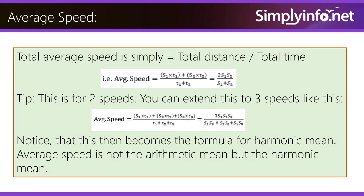Total average speed is simply equal to total distance by total time. That is, average speed equals s1 into t1 plus s2 into t2 by t1 plus t2, which equals 2s1s2 divided by s1 plus s2. Notice that this then becomes the formula for harmonic mean. This is for two speeds. You can extend this to three speeds like this.